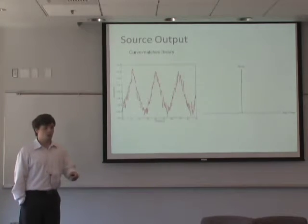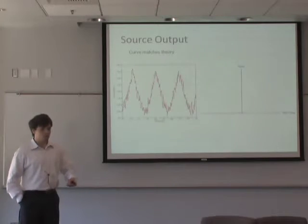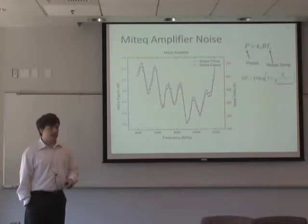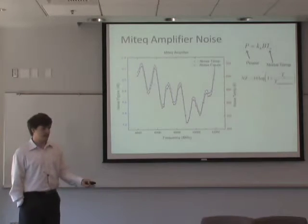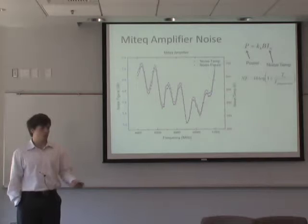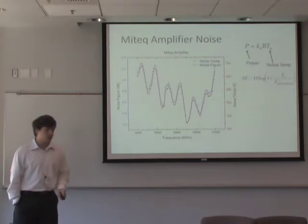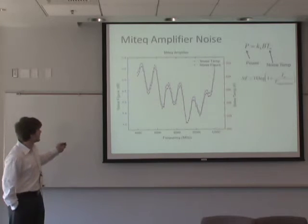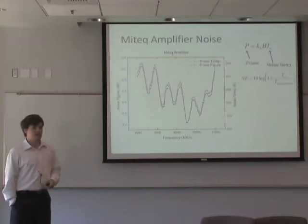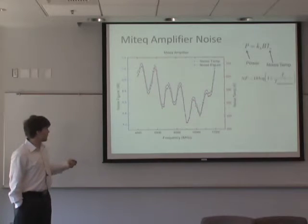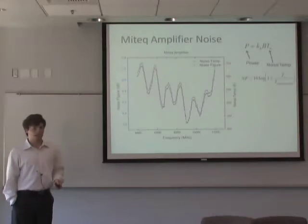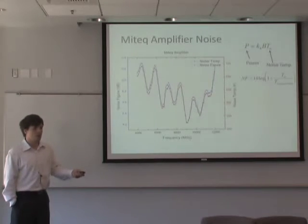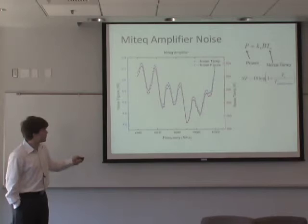Moving into the results of the noise measurement: I took one of our lab amplifiers that has a manufacturer spec and tested it using the noise source to confirm it's within what we expect. The amplifier was supposed to have a noise figure of about 4.8 dB. As you can see, it is roughly around 4.8 dB across the frequency range of 4 to 12 gigahertz. Noise figure is just another means of characterizing the noise temperature — the relation is shown here.